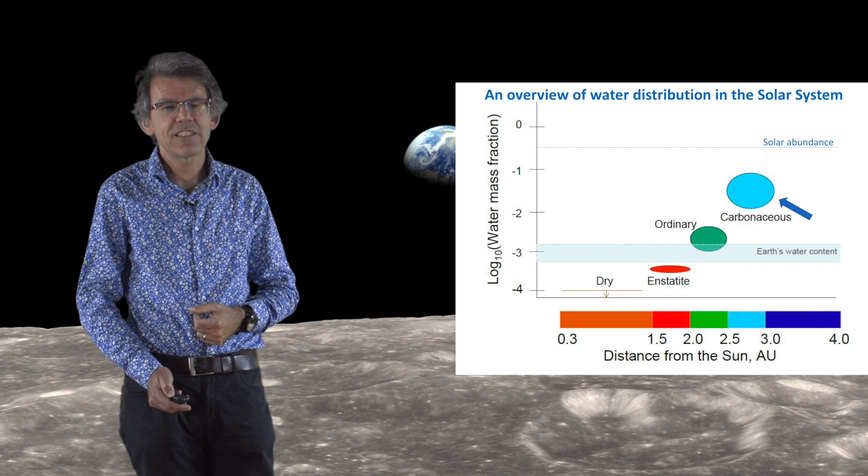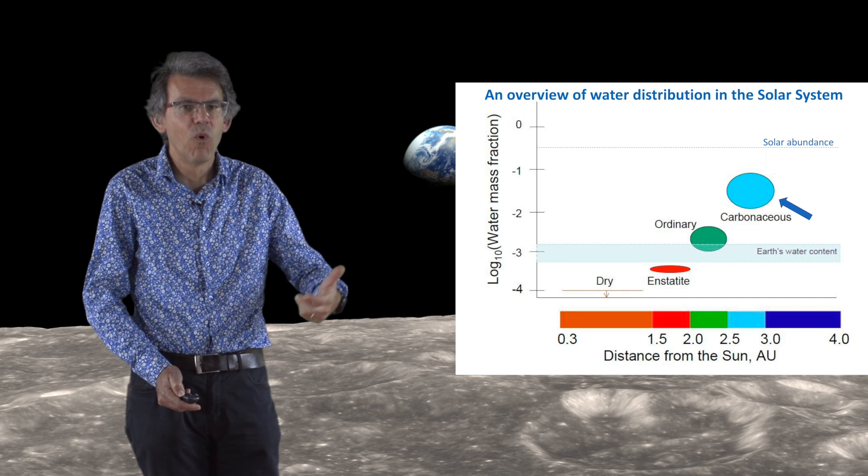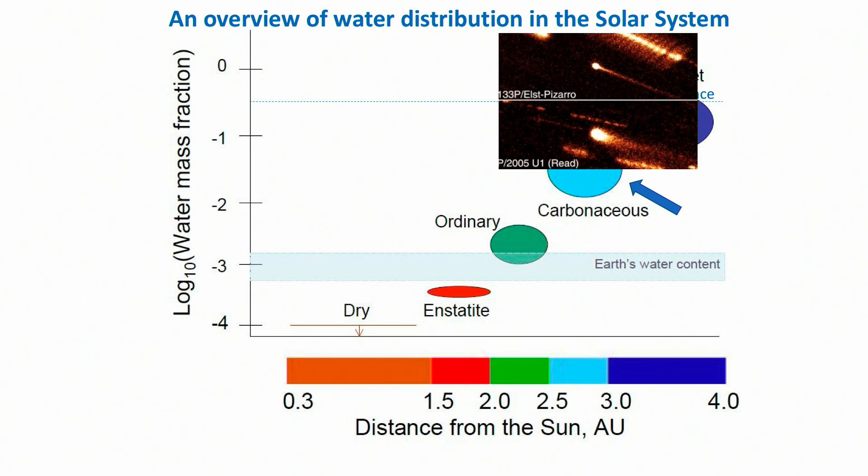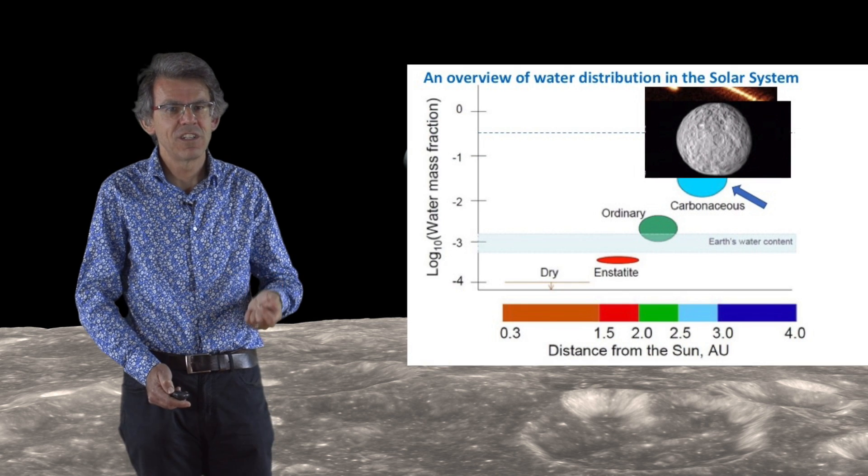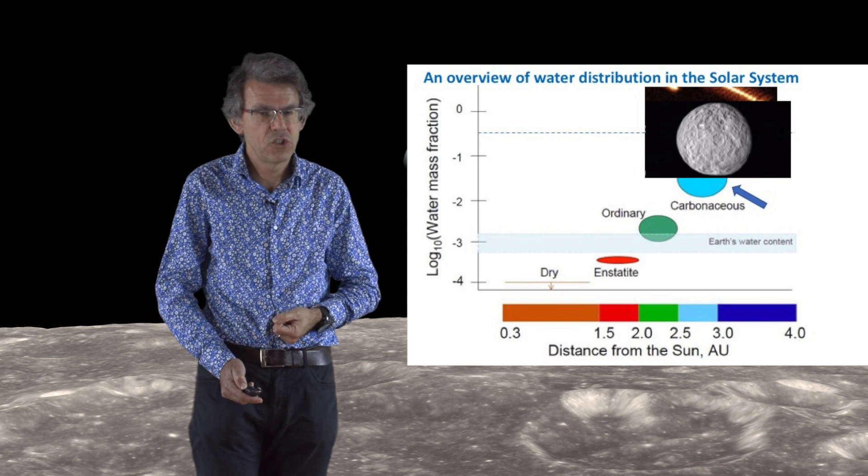Actually, there are some carbonaceous asteroids which seem to contain even more water than carbonaceous chondrites. For instance, we have what we call main belt comets. These are carbonaceous asteroids that become active like comets every time they pass at perihelion. And even Ceres, which is the biggest asteroid in the asteroid belt, also a carbonaceous asteroid, seems to have 30 percent water by mass according to the results of the recent Dawn mission.